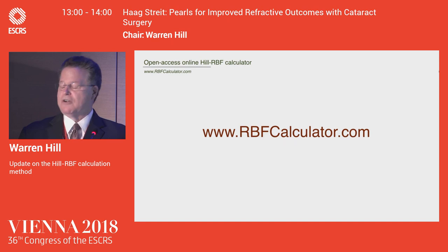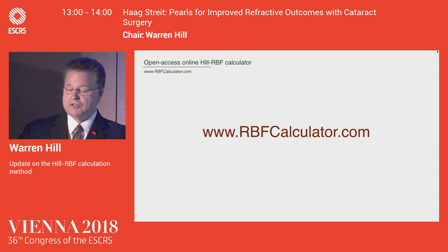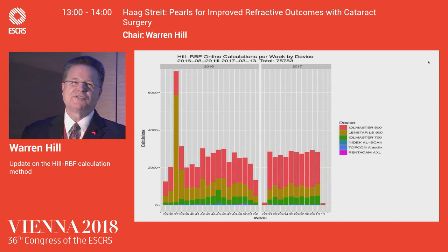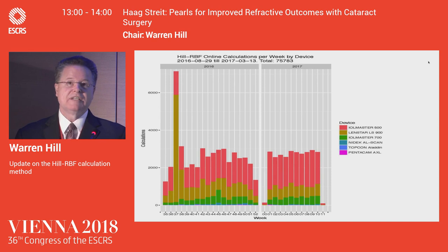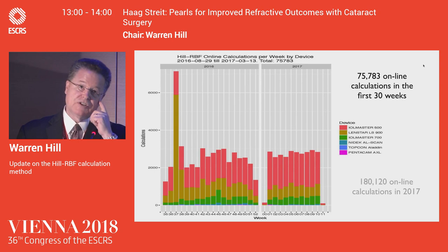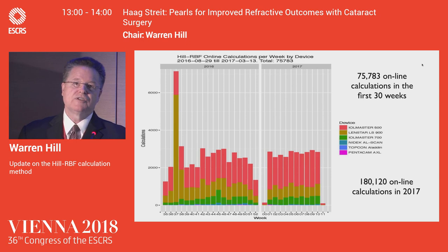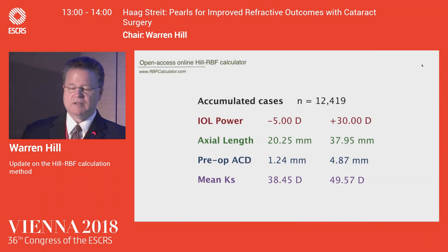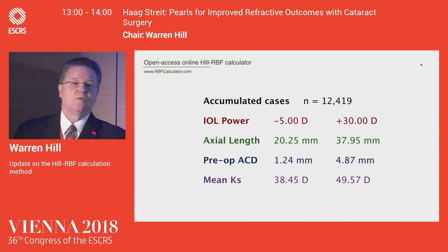The online calculator is now available. It was an act of enormous generosity on the part of Haggis that not only can you get this on the LENSTAR, but it's available to every single person in the world for free. We thought surgeons were slow to adapt — maybe this might take 10 years for people to catch up. But in the first one to three weeks, we had over 9,000 calculations; 75,000 in the first 30 weeks; and in 2017, we had 180,000 calculations on this website. The adoption has been very high.